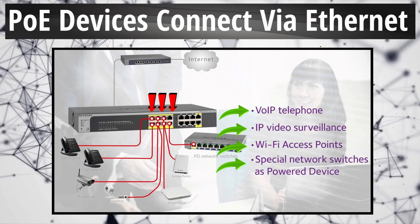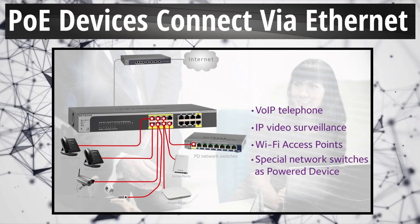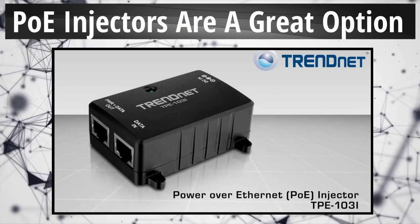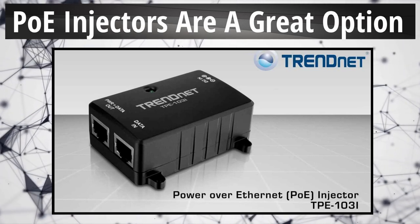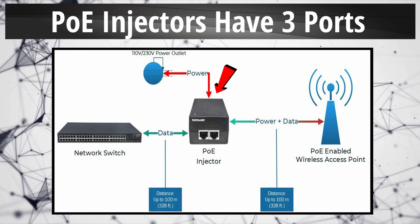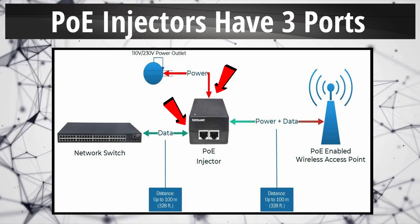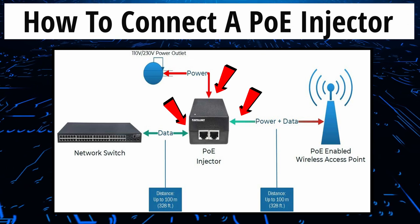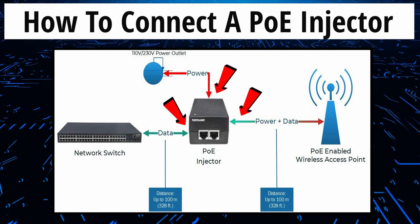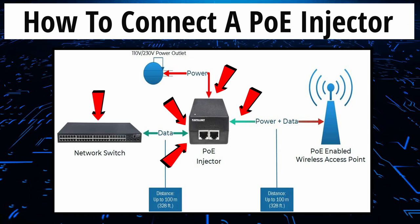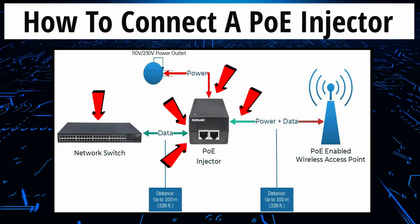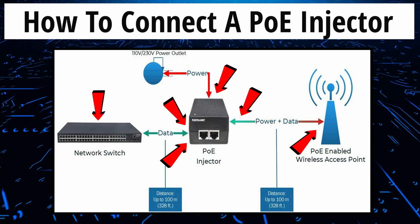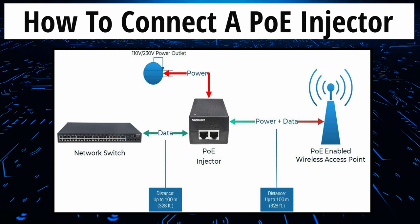Now if you don't have a PoE switch and you're not planning on buying one, then you can buy a PoE injector. A typical PoE injector has three ports: a power input, a data input, and a power data output. So all you have to do is connect the Ethernet cable from a non-PoE switch to the injector, plug in the power to the injector, and then connect the cable from the PoE device to the injector. And that's it.